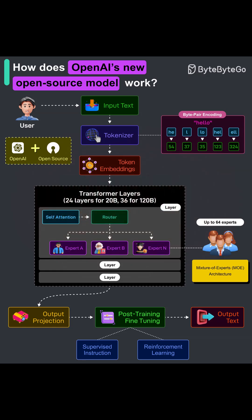Modern LLMs power everything from coding assistance to customer support, but scaling quality is expensive. The idea behind these new models is simple: activate only the parts of the network that matter for each token, so you get strong real-world performance while keeping compute low.